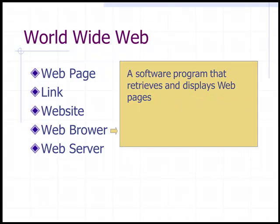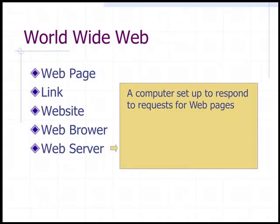A web browser is a software program that retrieves and displays web pages. A web server is a computer set up to respond to requests for web pages. For example, you could have a hosting account on yahoo.com, and when somebody types in your web address, it'll go to that web server, grab those web pages, and bring it back to your web browser.